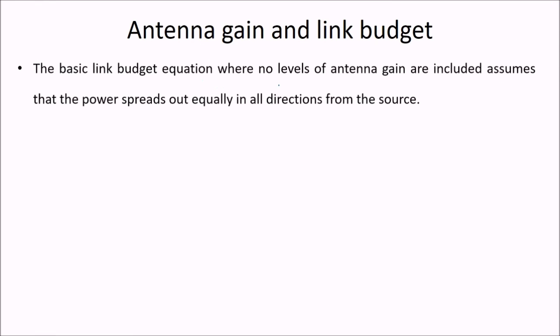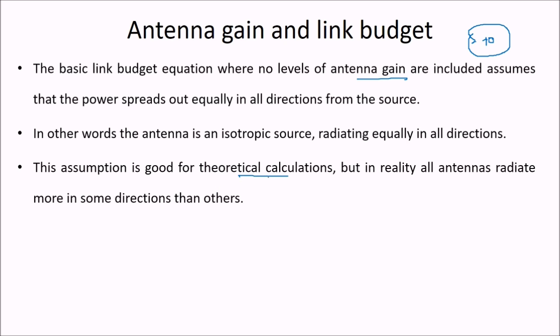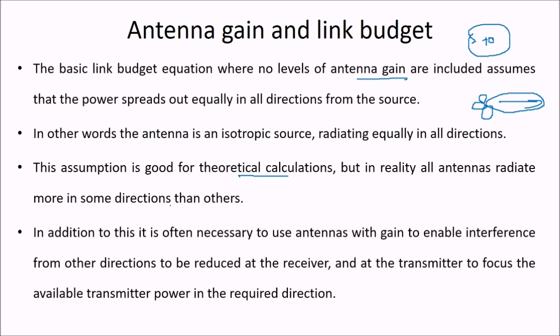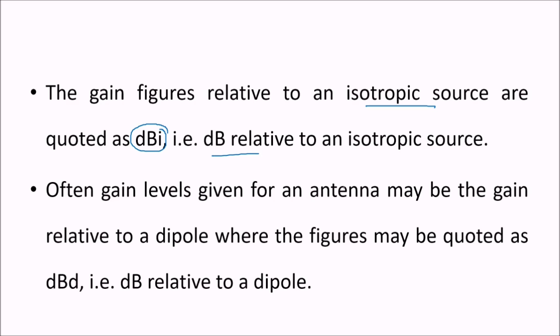The basic link budget equation where no levels of antenna gain are included assumes that the power spreads out equally in all directions from the source. This antenna is isotropic, radiating equally in all directions. For theoretical calculation this assumption is good, but in reality all antennas radiate more in some directions than others - this is the directivity. In addition, it is often necessary to use antenna with gain to enable interference from other directions to be reduced at the receiver and at the transmitter to focus the available transmitted power in the required direction. The gain figures related to isotropic sources are quoted as dBi - dB related to an isotropic source. Gain levels given for an antenna may be gain related to the dipole where the figures may be quoted as dBd - dB related to dipole. dBi is related to isotropic source.